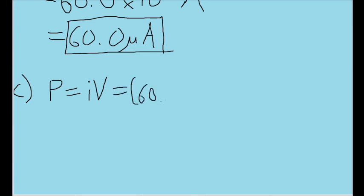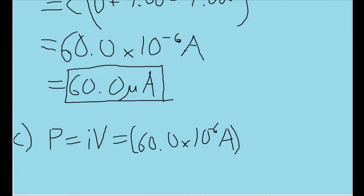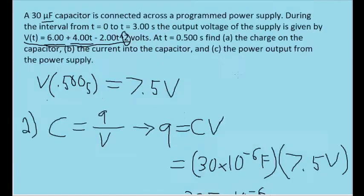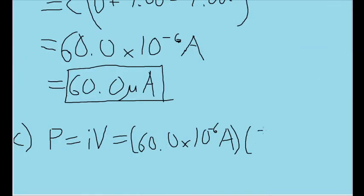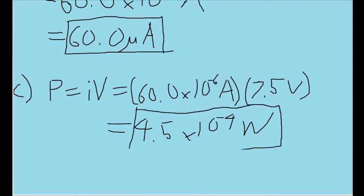It's just 60.0 times 10 to the negative six amperes. And I'm not using the micro prefix here because it needs to be in standard SI units for our result to be accurate. Multiplied by the voltage at a given time or the potential difference at a given time. Which as we established way back at the beginning of the problem is just going to be 7.5 volts. So finally, plugging this into your calculator and we find the power as about 4.5 times 10 to the negative 4 watts. And that is our final answer for the power coming from the power supply.